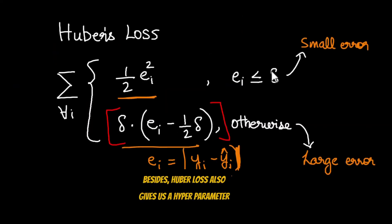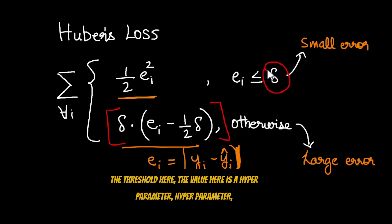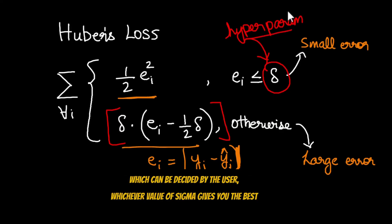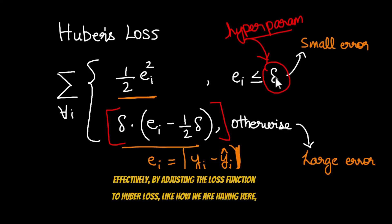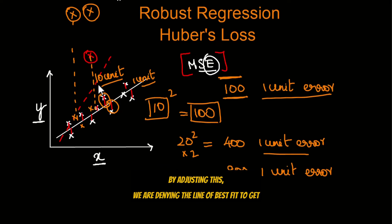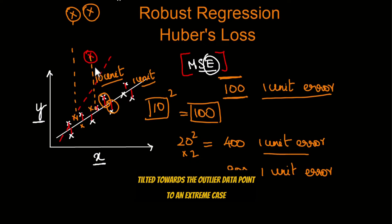Additionally, Huber loss provides a hyperparameter — the threshold sigma — which can be decided by the user. Whichever value of sigma gives you the best prediction, that is the value you use. By adjusting the loss function to Huber loss, we prevent the line of best fit from tilting towards outlier data points to an extreme degree. That's a simple and brilliant approach to solving the problem of outliers.